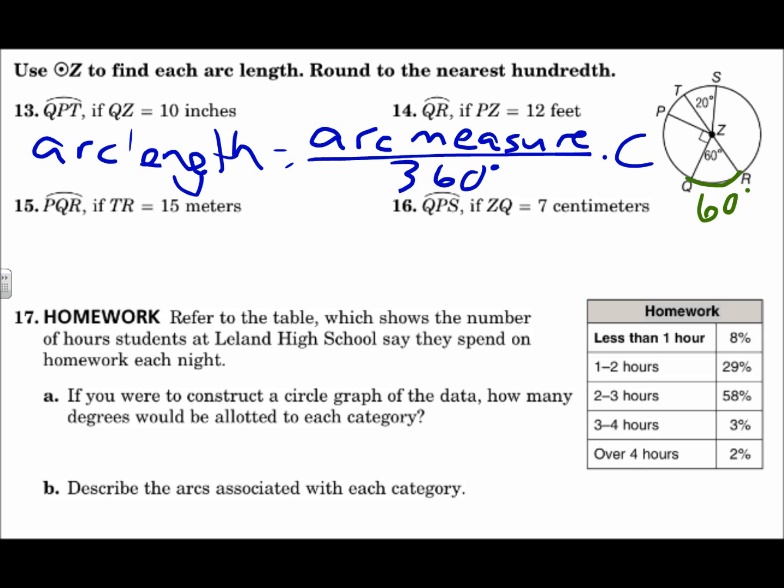So for each of these, I need to use the formula, arc measure over 360 times the circumference. So, arc QPT is my first one. So, I need the arc measure, and the arc measure can be found. I've got a diameter there. 60 is this part. 60 plus 120 is 180. So my arc measure will be 120. My circumference, they give me QZ, which is 10. Circumference is 2 pi R. So I'll use 2 pi R for the circumference.